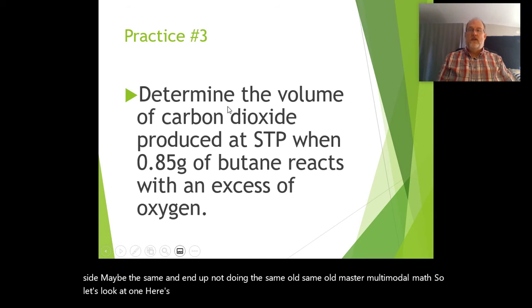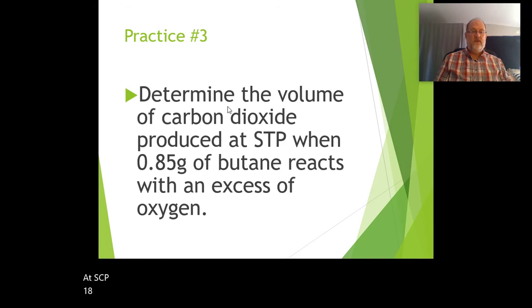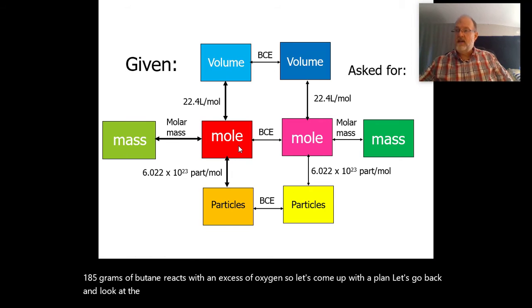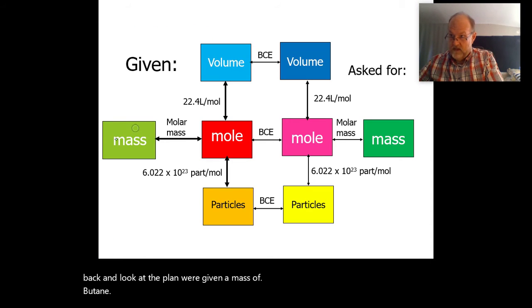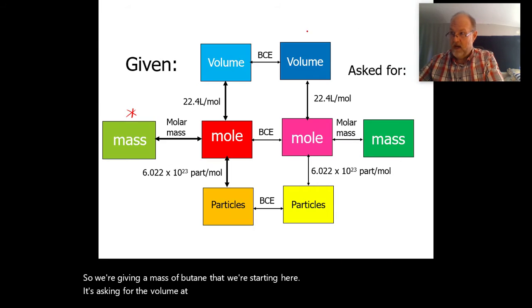Here's one: determine the volume of carbon dioxide produced at STP when 0.85 grams of butane reacts with an excess of oxygen. Let's come up with a plan. We're given a mass of butane, so we're starting here. It's asking for the volume at STP, so we're ending up here.